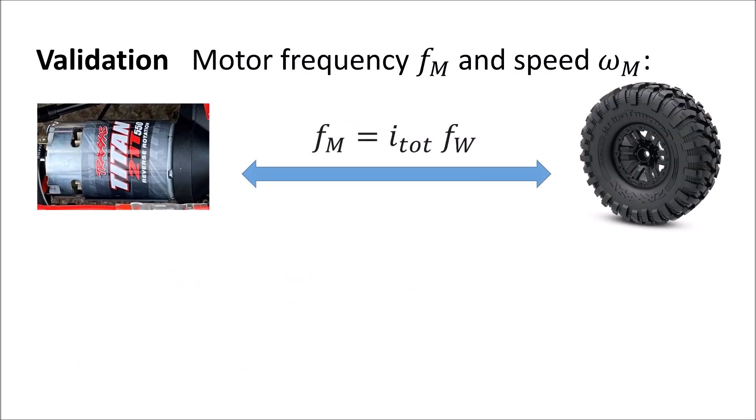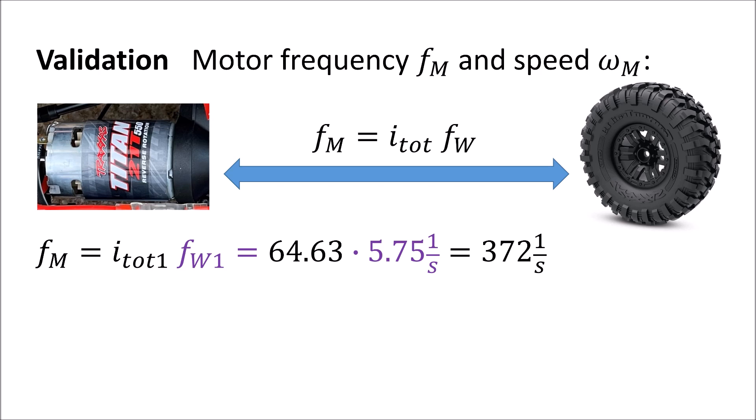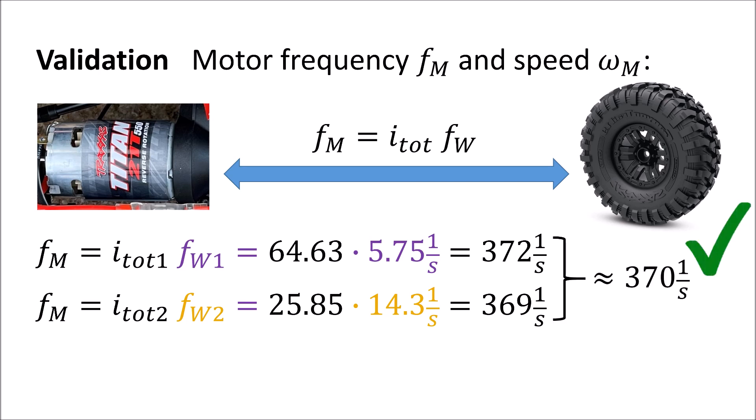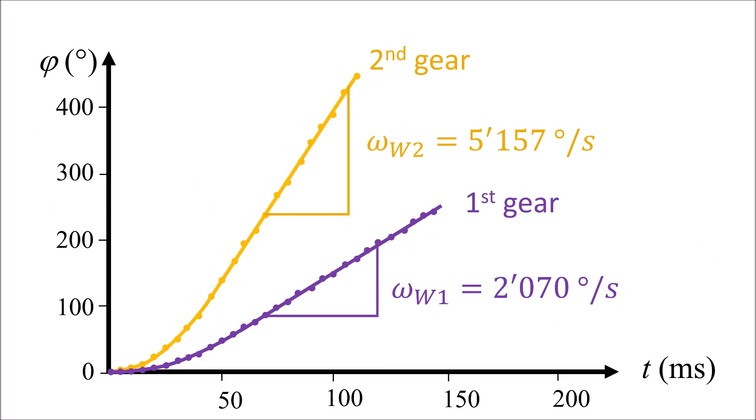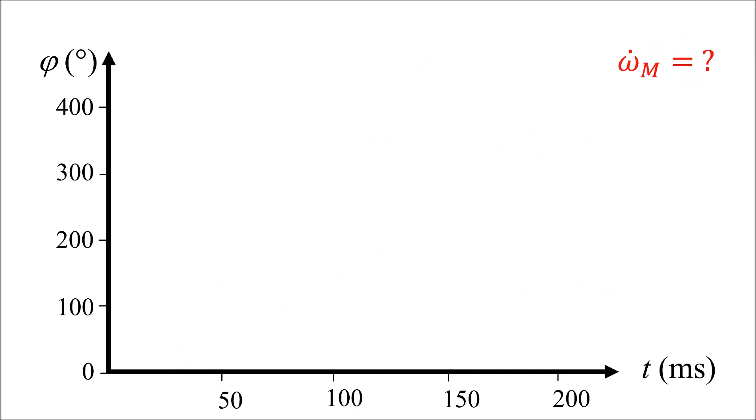The frequency of the motor can be computed from the measured frequencies at the wheel axis knowing the overall gear ratios at first and second gear. As expected the values for the motor are about the same. The angular speed can be computed from the motor frequency.